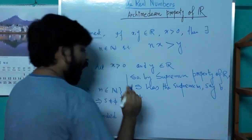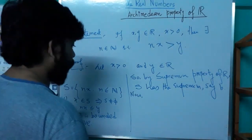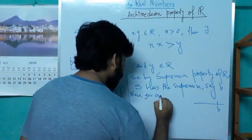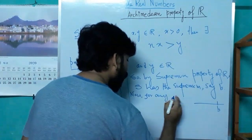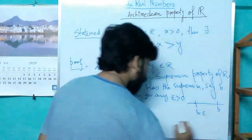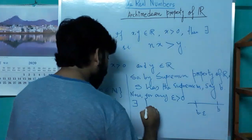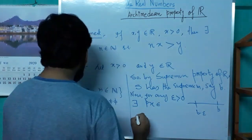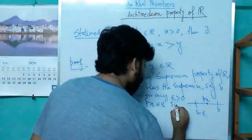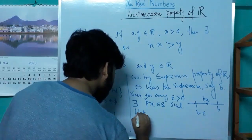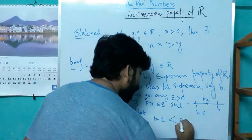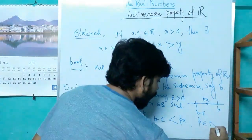We apply the property of supremum. Since B is the supremum, for any ε > 0, there exists an element P·x ∈ S such that B − ε < P·x, where P is a natural number.